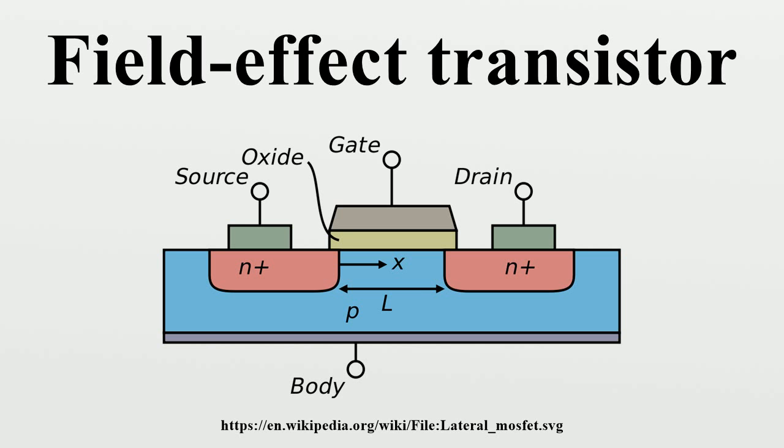In an N-channel enhancement mode device, a conductive channel does not exist naturally within the transistor, and a positive gate to source voltage is necessary to create one. The positive voltage attracts free-floating electrons within the body towards the gate, forming a conductive channel.